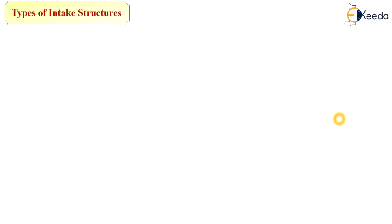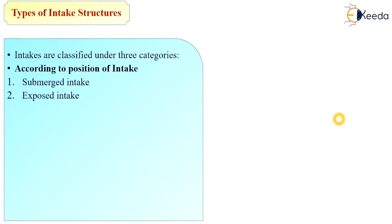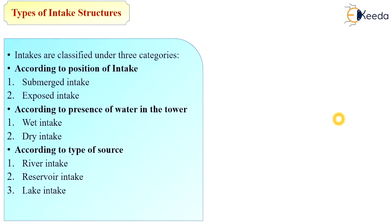The next important part is the types of intake structure. Intakes are classified under three categories: first, according to position — submerged intake and exposed intake; second, according to presence of water in the tower — wet intake and dry intake; third, according to type of source — river intake, reservoir intake, lake intake and canal intake.